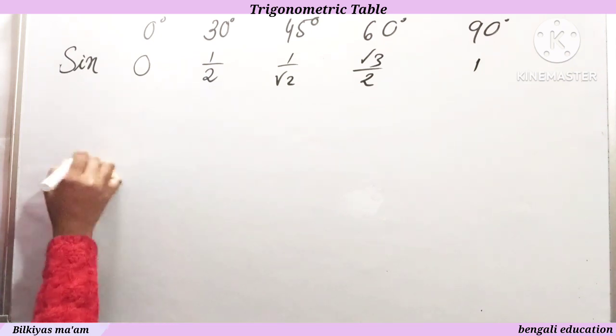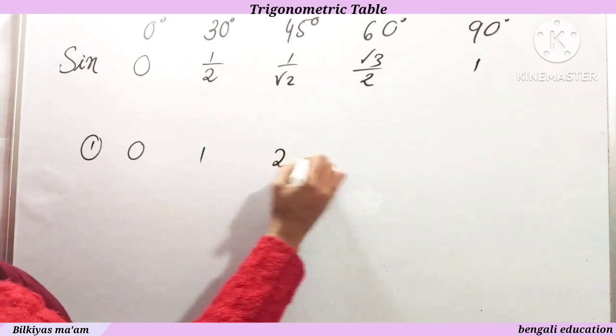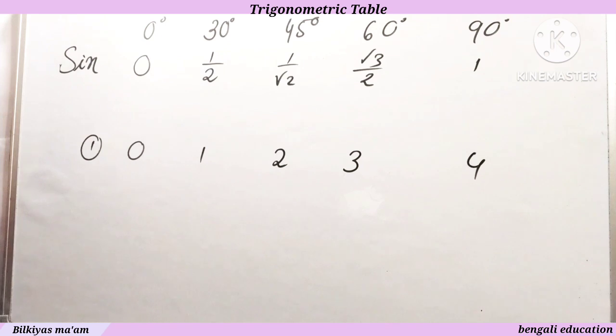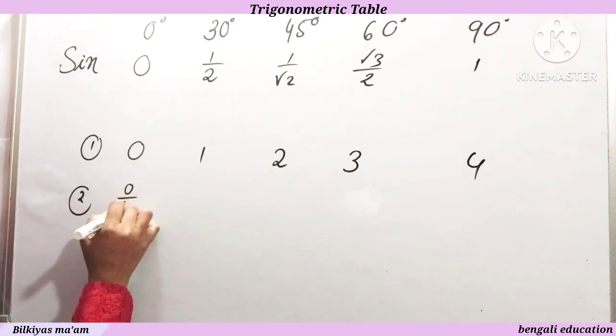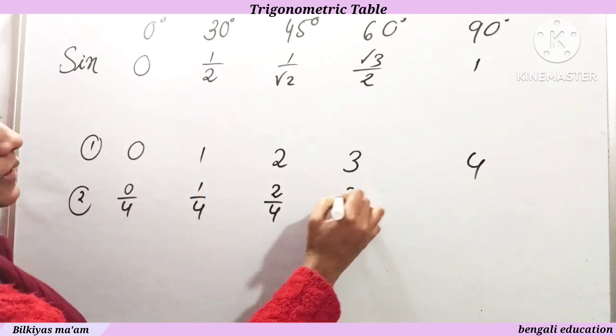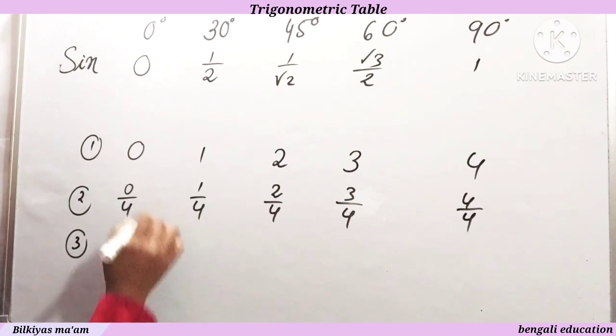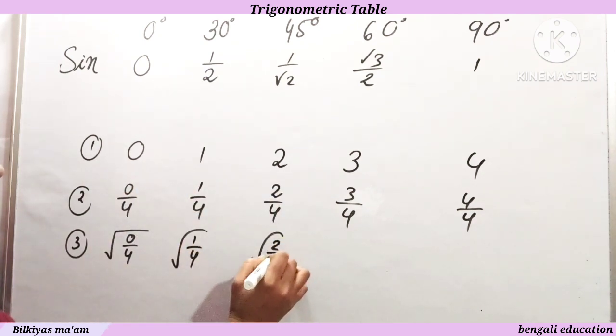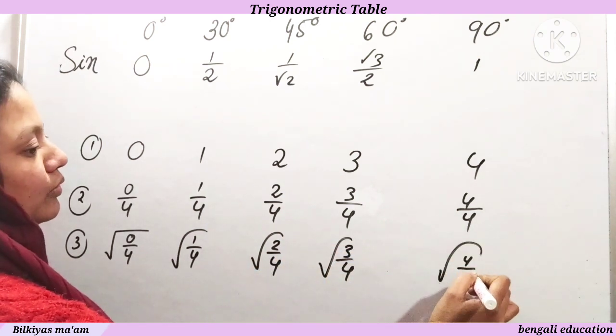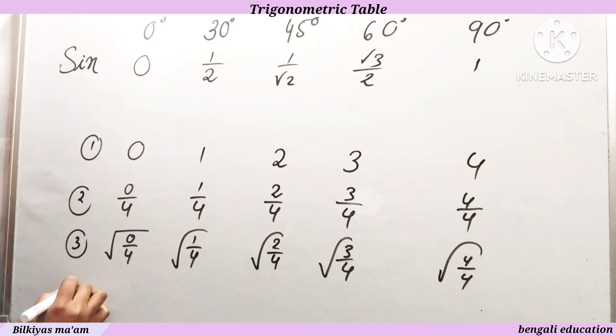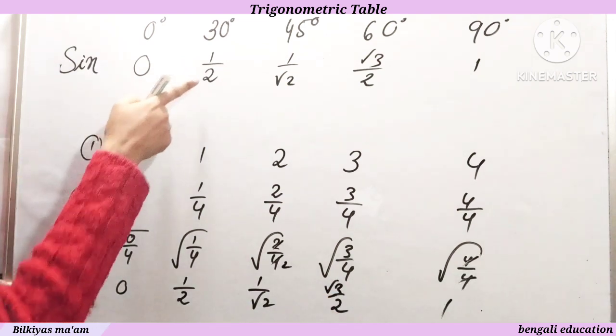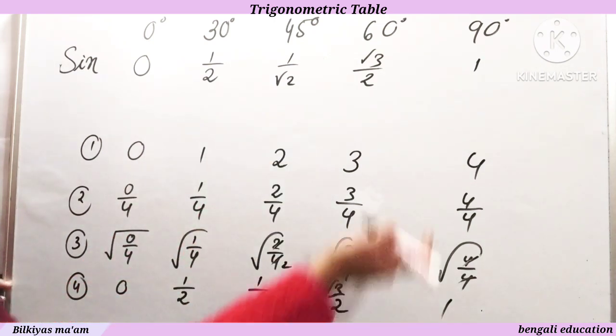Another important trick to remember: First step is 0, 1, 2, 3, 4. Second step is divide by 4: 0 by 4, 1 by 4, 2 by 4, 3 by 4, 4 by 4. Third step is take root: root of 0 upon 4, root of 1 upon 4, root of 2 upon 4, root of 3 upon 4, root of 4 upon 4. Fourth step is the answer: 0, 1 upon 2, 1 upon root 2, root 3 by 2, and 1. These are the sin values for 0, 30, 45, 60, and 90 degrees.